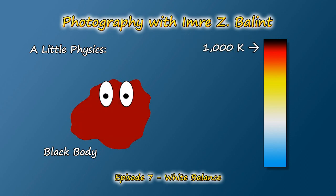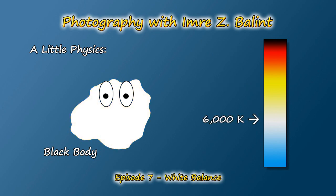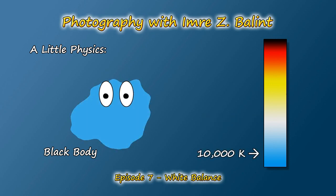For example, when the black body glows red, the temperature is about 1,000 Kelvin. When yellow, the temperature moves up to about 3,500 Kelvin. At around 5,500 to 6,000 Kelvin, the black body is literally white hot. And beyond this temperature, the black body shifts into blue hues.